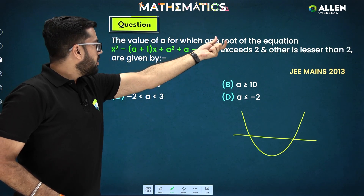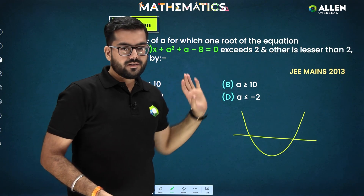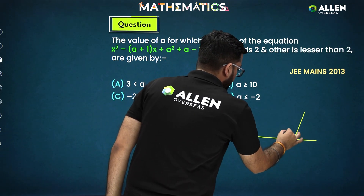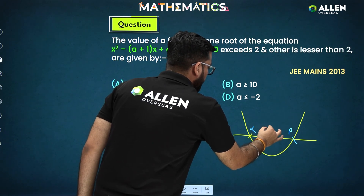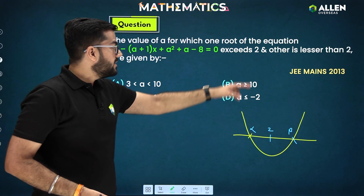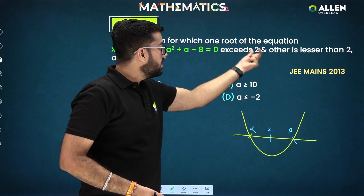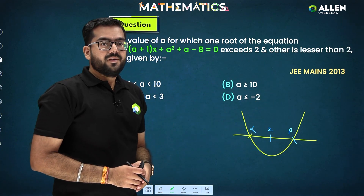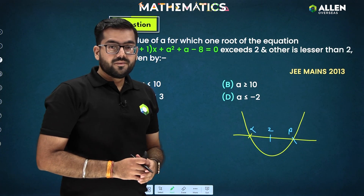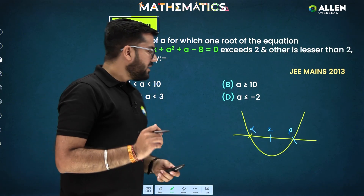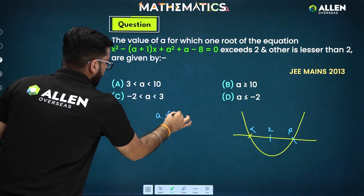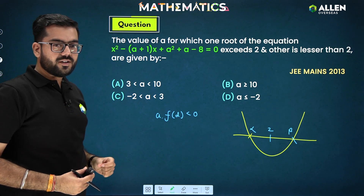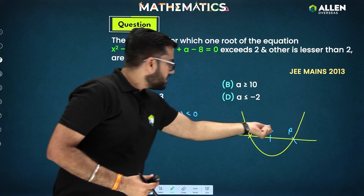One root exceeds 2 and the other is less than 2 — let's say alpha and beta are the two roots, and 2 lies between them. This means at d = 2, we are getting f(2) < 0. We can also multiply by 'a', so a·f(d) < 0. Here 'a' (the coefficient of x²) is 1, and d = 2. We just need to fulfill the condition a·f(d) < 0.